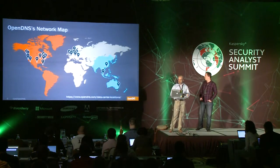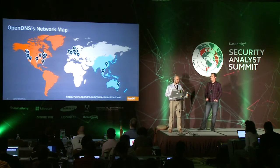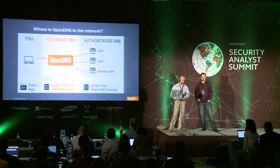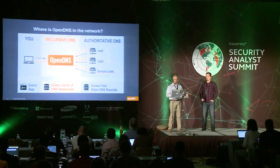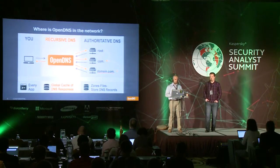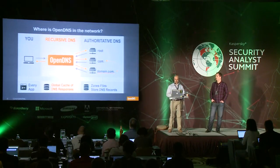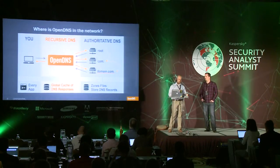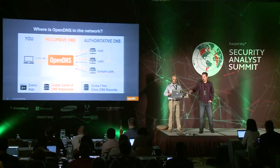This is the map of our data centers. We have 23 of them across four continents. That allows us to see a lot of traffic, mainly DNS of two types. We have recursive traffic, which is basically between the users and our resolvers, and then we have authoritative traffic, which allows us to build passive DNS — the traffic between our resolvers and the authoritative name servers of the internet.